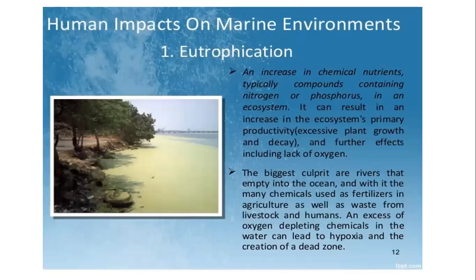Regarding human impacts on the marine environment — first, eutrophication increases chemical nutrients, specifically nitrogen and phosphorus compounds, in an ecosystem. It can result in increased primary productivity and further effects including lack of oxygen. The biggest culprits are rivers that empty into the ocean carrying chemicals used as fertilizers in agriculture, as well as the waste of livestock and human beings. An excess of oxygen-depleting chemicals in the water can lead to hypoxia and the creation of dead zones. Eutrophication caused by lack of oxygen can severely affect marine life.